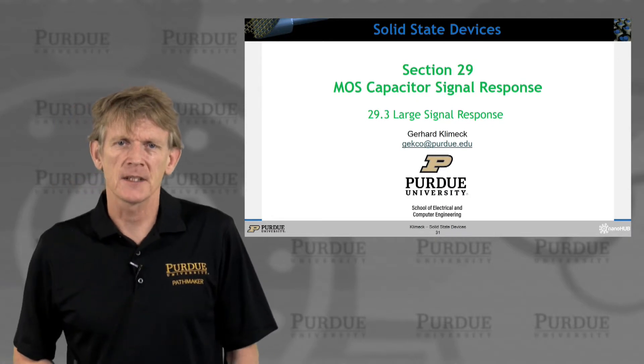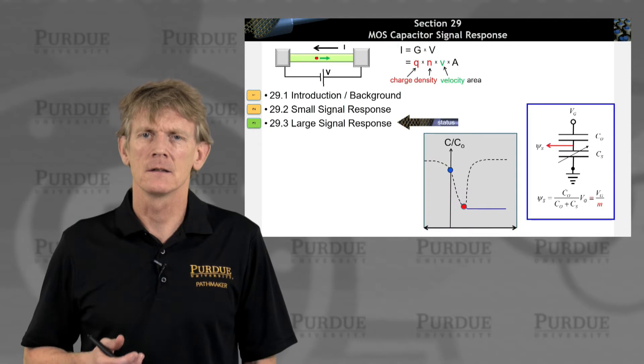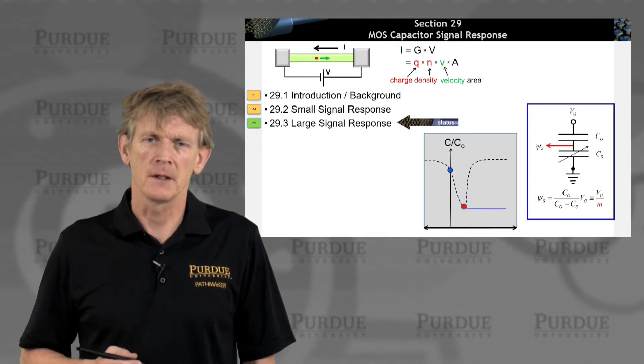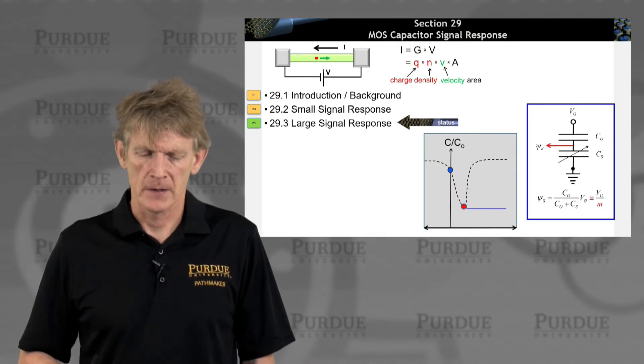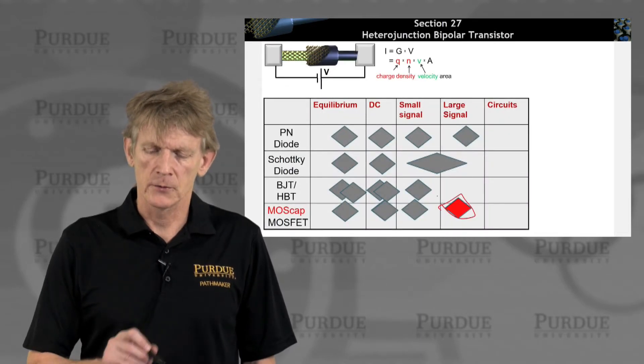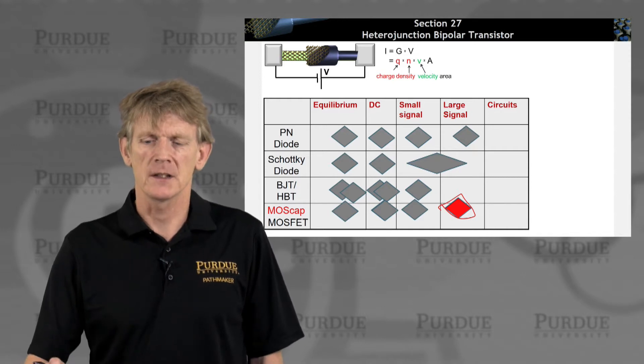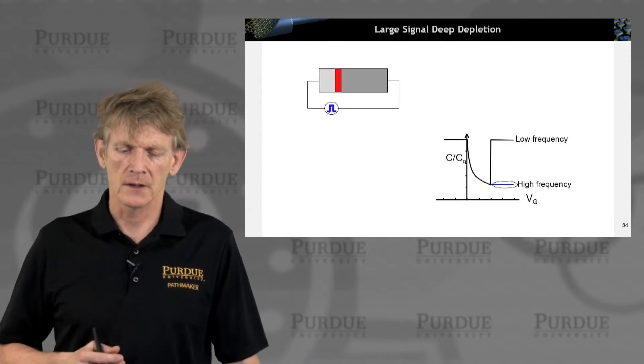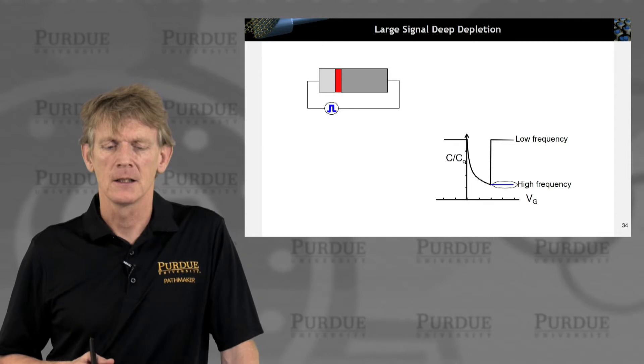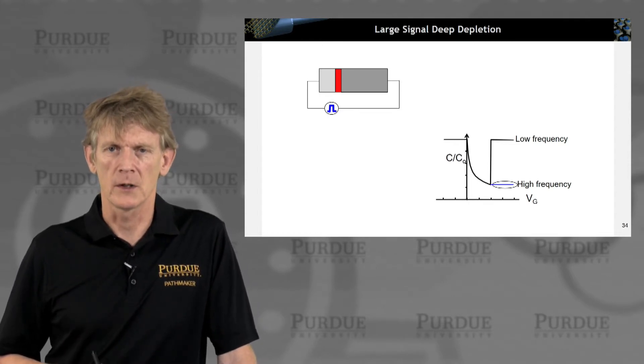All right, so let's complete our section here on MOS capacitors and look at the large signal response in these capacitors. All right, so we almost made it through this table for the capacitors. Next we'll look at MOSFETs, but let's conclude a few things on the large signal, especially deep depletion approximation here.